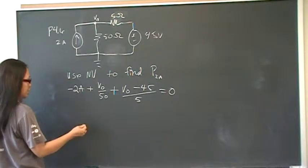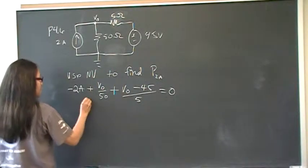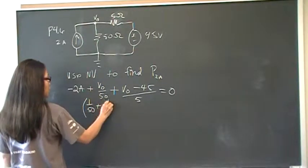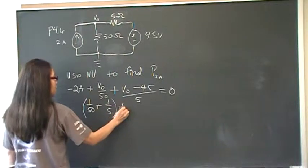So, we're looking at currents here. So, now I'm going to combine my V0s together. I'm going to have 1 over 50, plus 1 fifth, right here, V0.